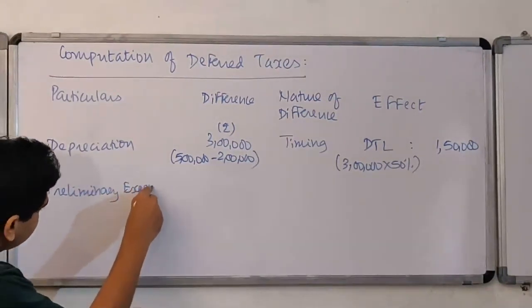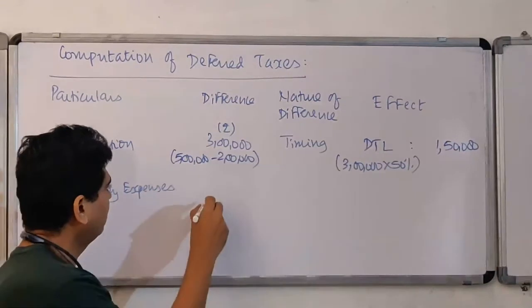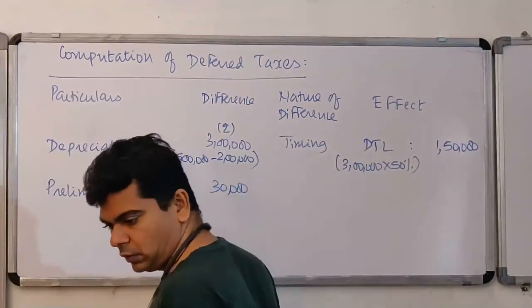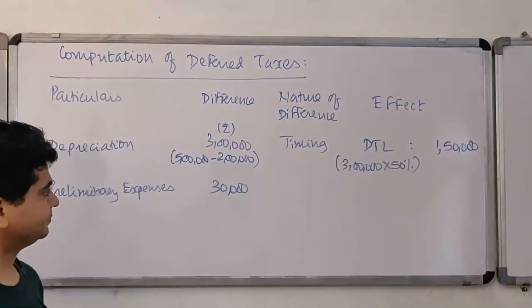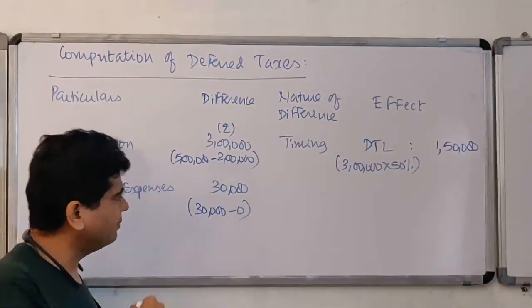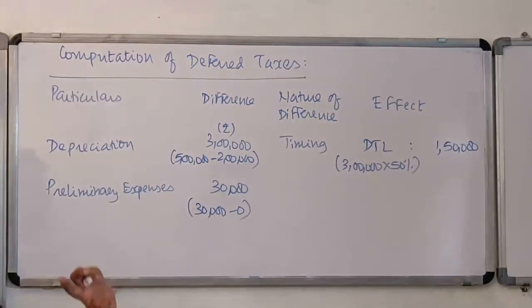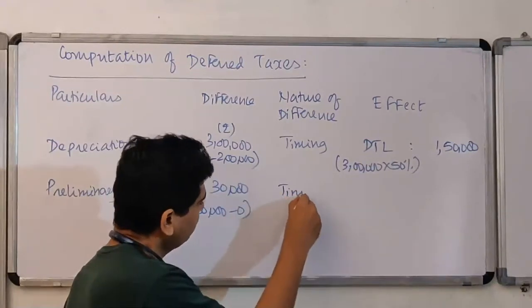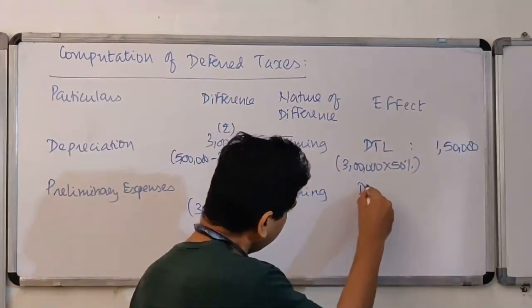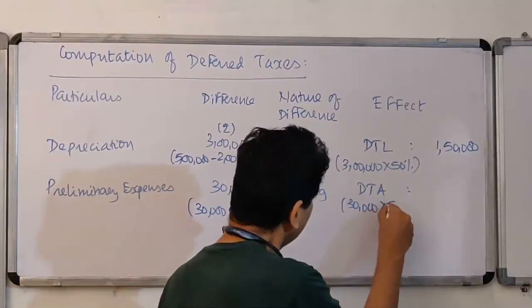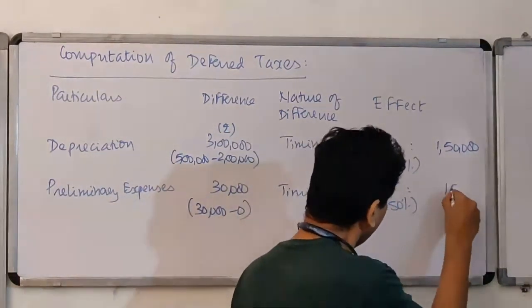Preliminary expenses. Thirty thousand, isn't it? It must be zero. I must have debited it entirely to the P&L, but not for tax. Timing. On this, we will recognize DTA. Fifteen thousand.